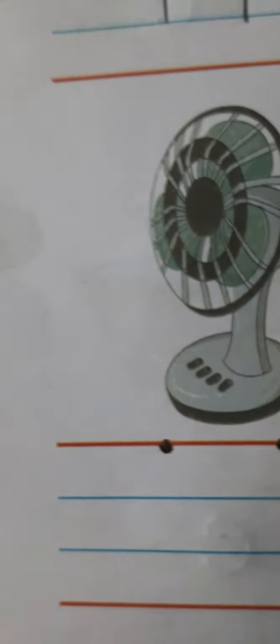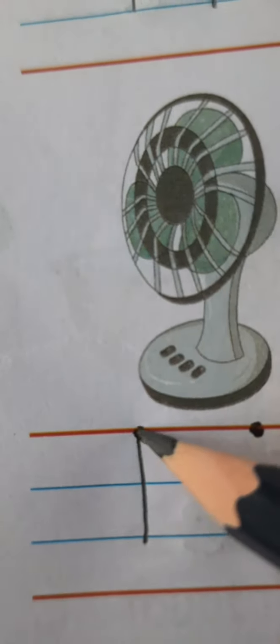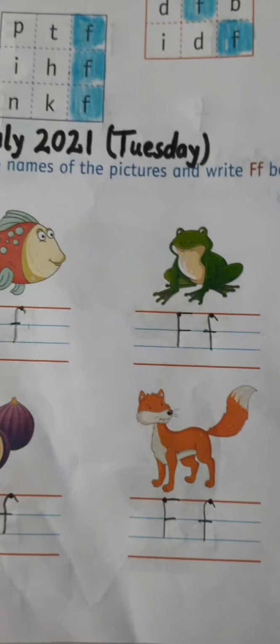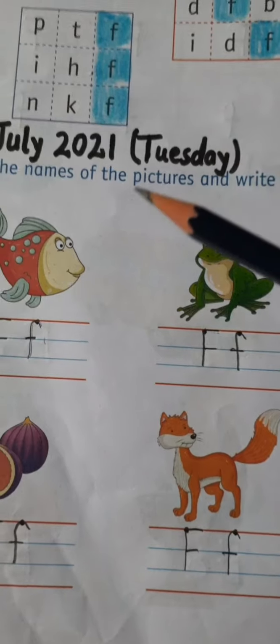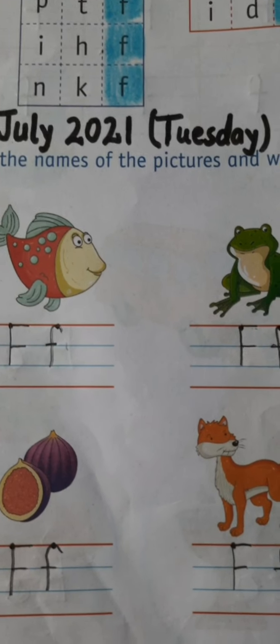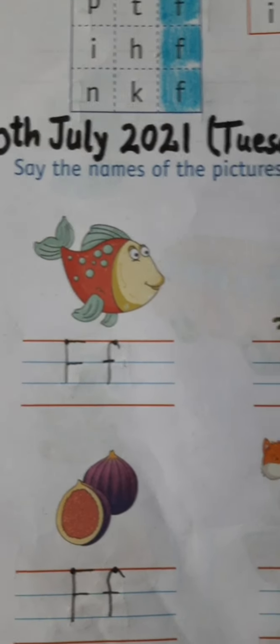F is for fan. Fan. So dear children do your worksheet neat and clean and send it to ma'am. And when you recognize pictures, do it with phonic sound. F. What is the sound of F children? F. Okay. Thank you children. Have a nice day. Bye bye.